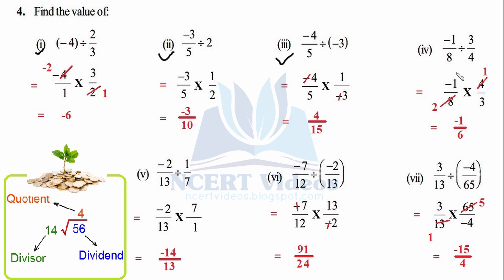Fourth part: write the rational number as it is, convert division to multiplication, flip the divisor 3/4 to get 4/3. Then: 1 × 4 = 4; 2 × 4 = 8; minus × 1 = −1; 3 × 2 = 6. Answer: −8/6, simplified.